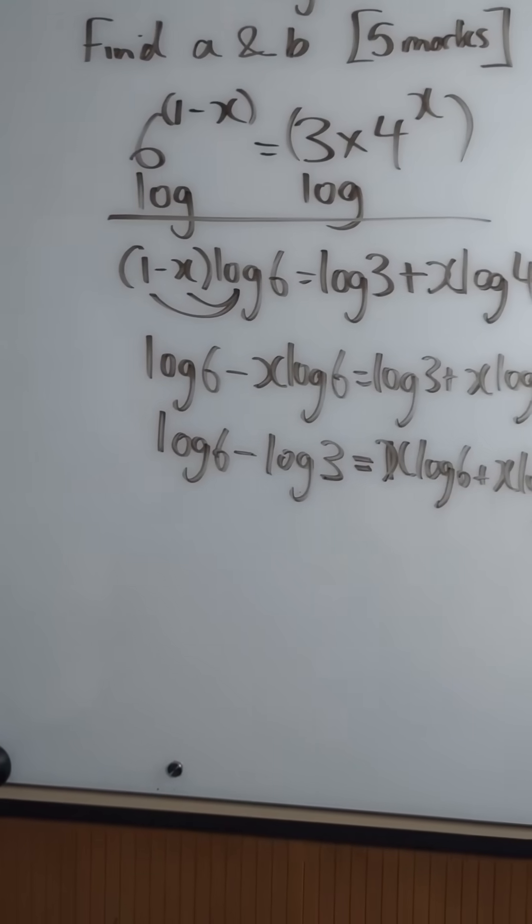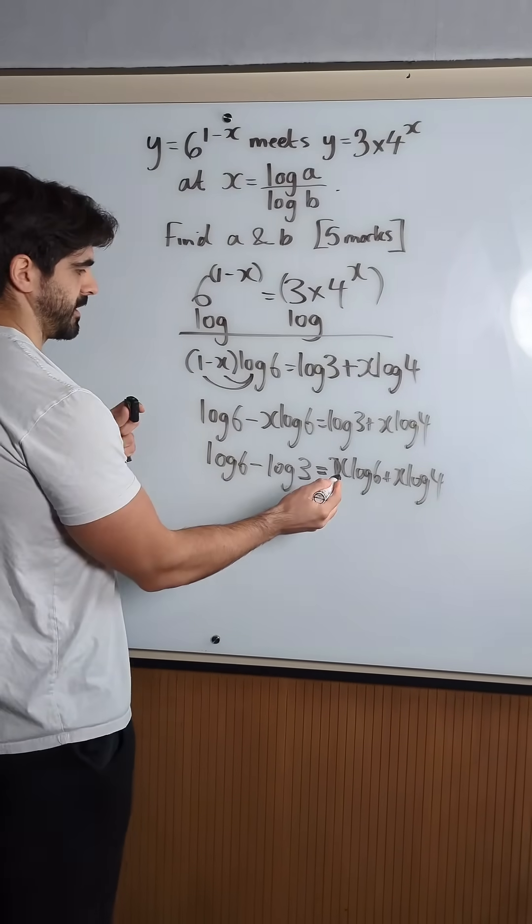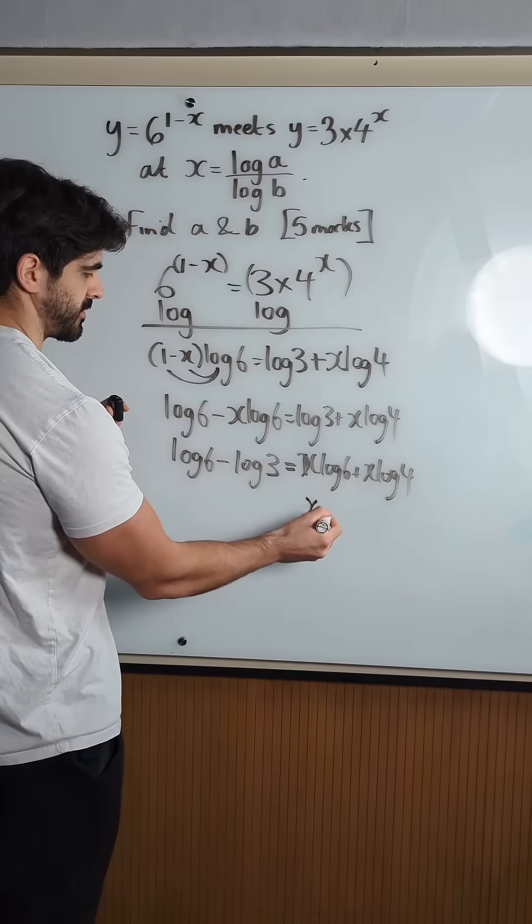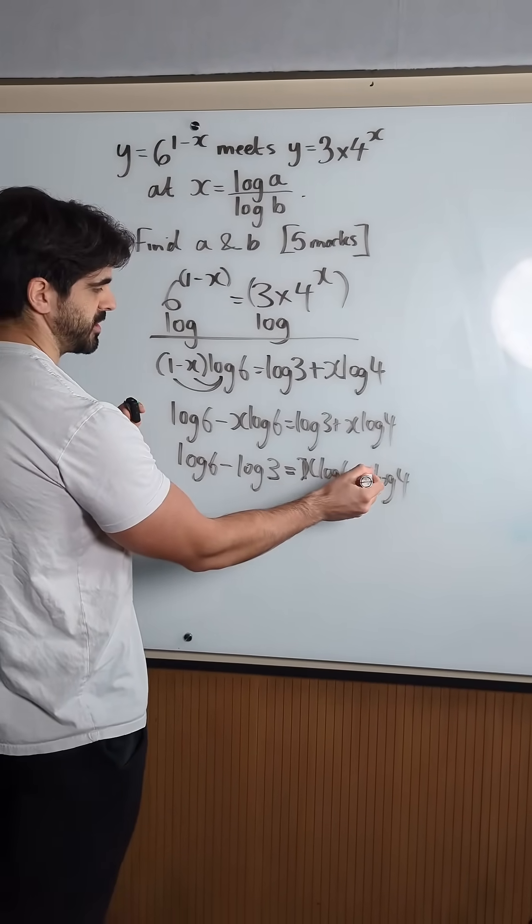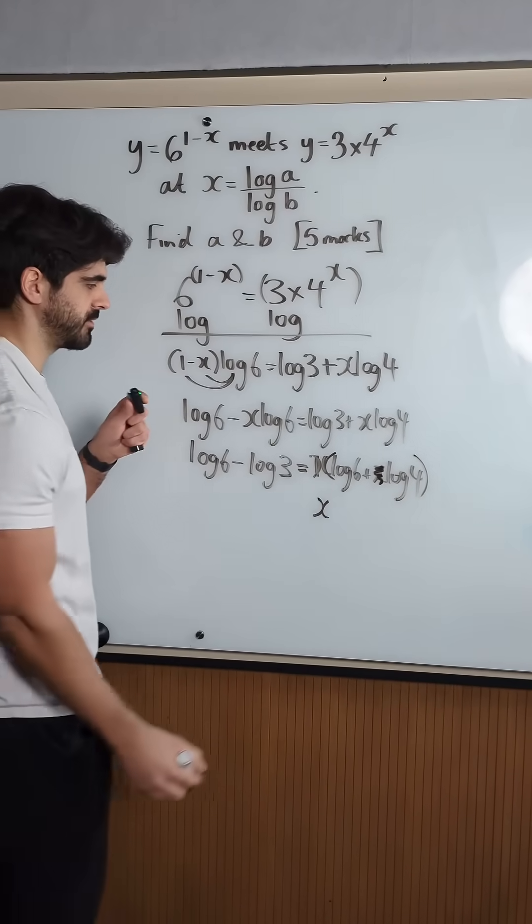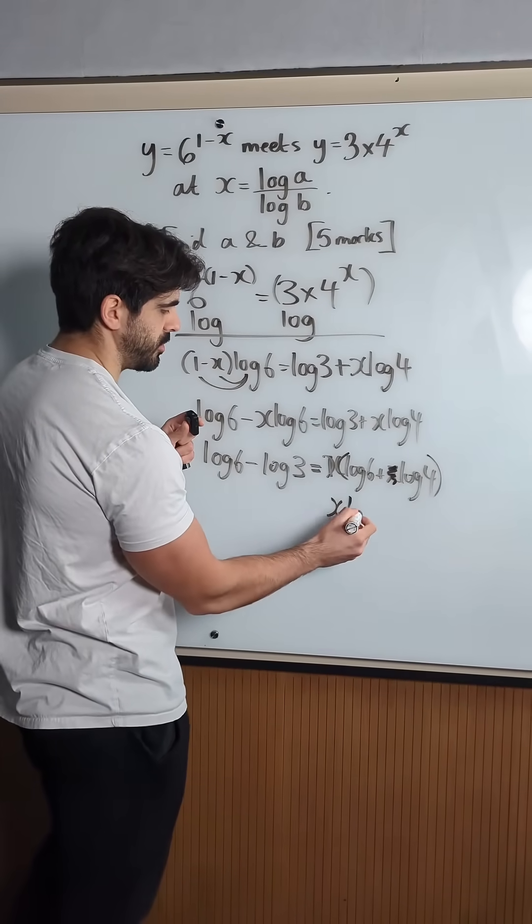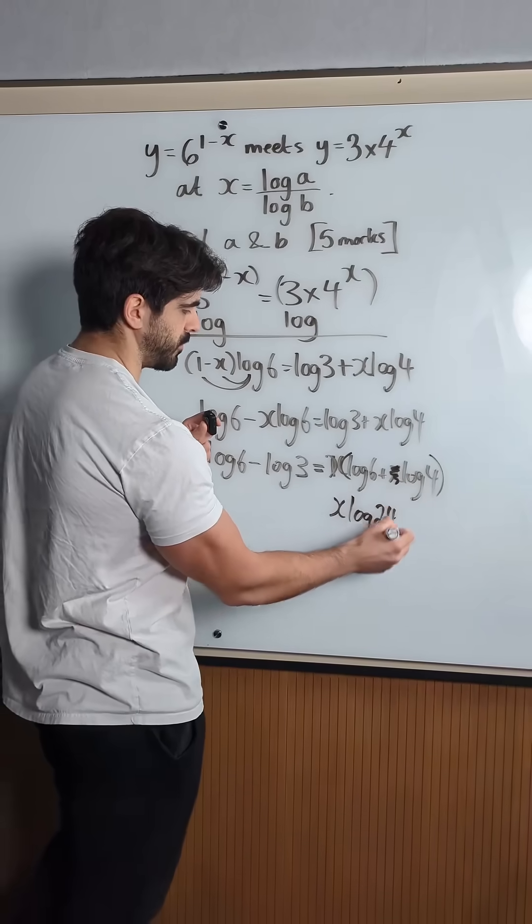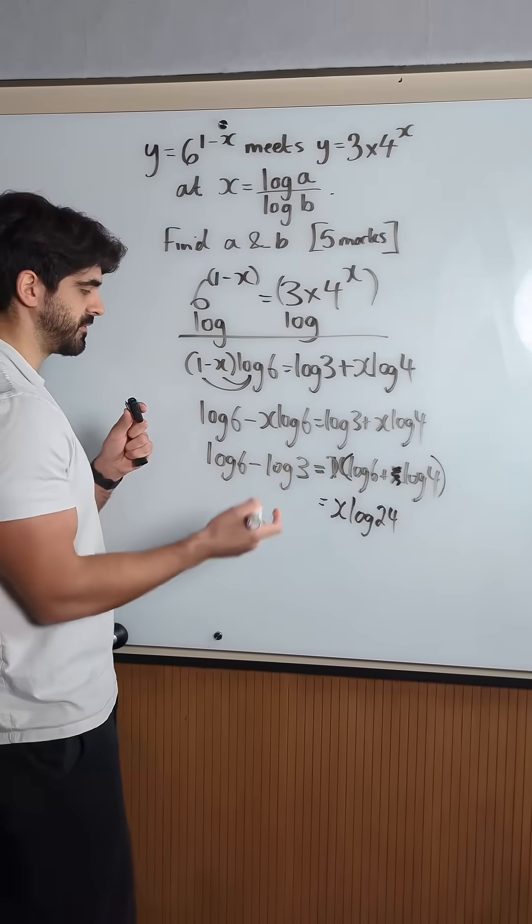And then we're just going to use our log rules again. Let's use another pen. Factorizing out x. When you factorize out x, it's going to be cheeky here. I'm just going to cross that out and pretend I have. You're going to get plus there. So you're going to multiply these numbers. You're going to get log of 24 here. The minus means you're going to divide them.